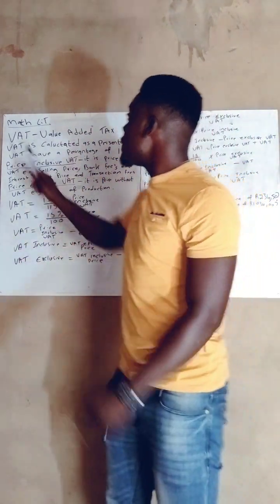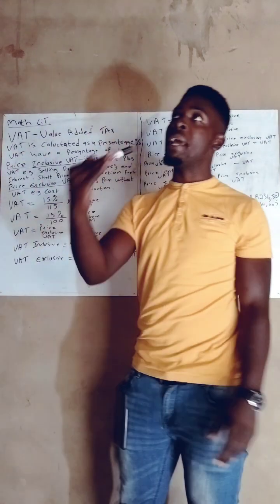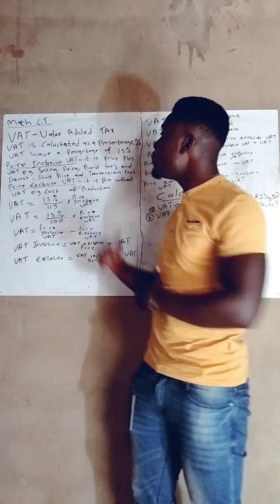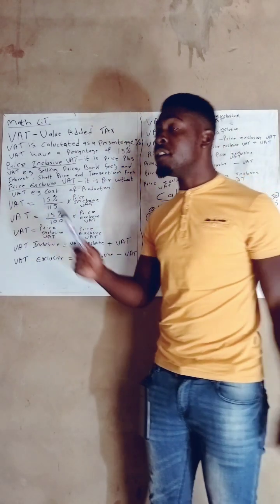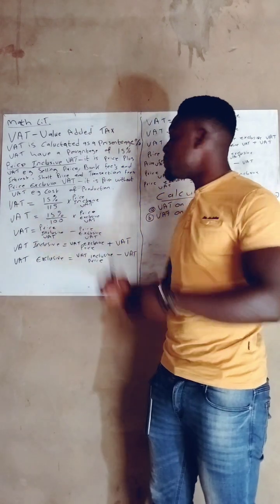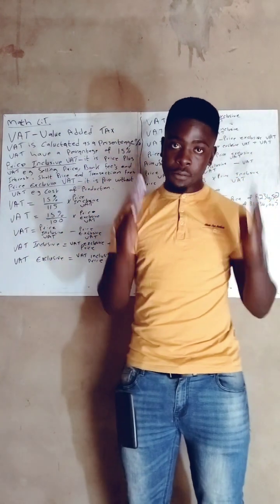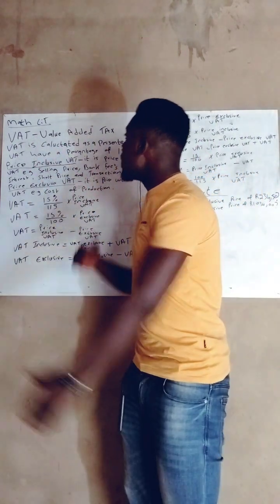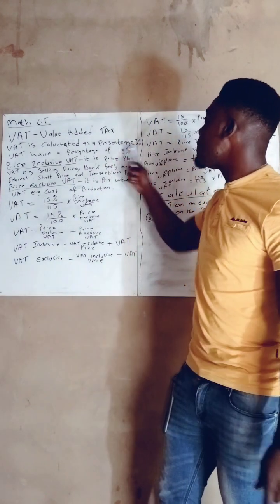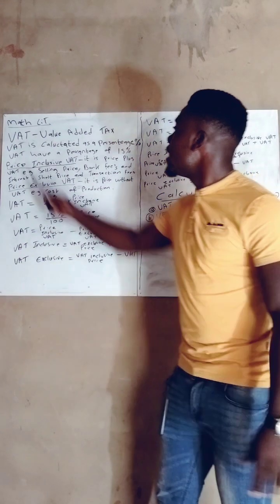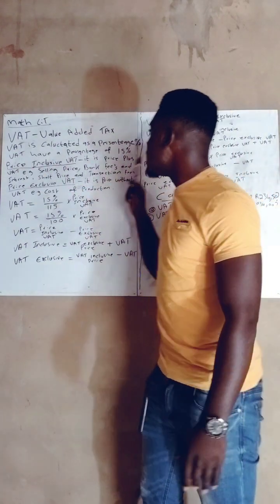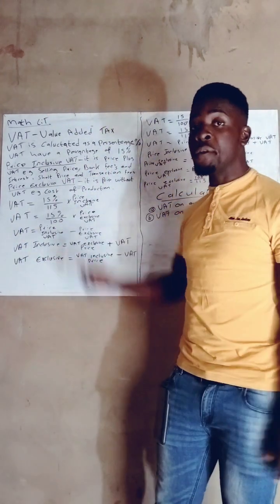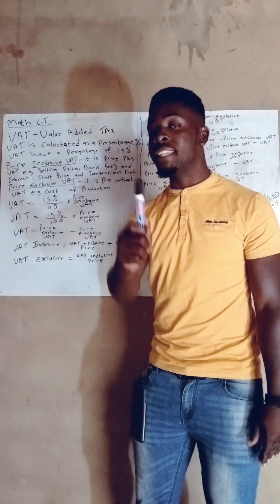First of all, we have to know what VAT is. You must know it by heart. VAT stands for Value Added Tax. Whenever someone asks you what VAT is, you must be able to say without doubting: VAT is Value Added Tax. Now, VAT is calculated as a percentage — VAT has a percentage of 15. That means our VAT rate does not change; we always have 15% VAT.